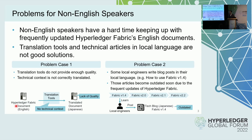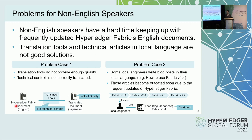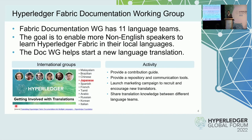Automatically translated documents do not provide good quality. In other cases, some local engineers write blog posts in their local language, but those articles become outdated soon because Fabric is updated frequently. For example, someone writes how to deploy Fabric V1.4, but when Fabric V2.2 is released, those documents become outdated. To overcome these language barriers, the Hyperledger Fabric Documentation Working Group started an initiative to translate official documents into local languages, enabling more non-English speakers to learn Fabric.